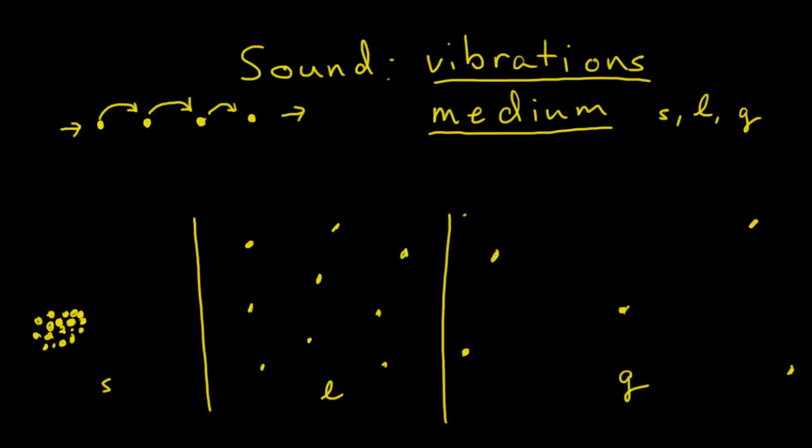So you can see, let's use a different color. So you can see that if the particles are very, very close together, like in a solid, once this one starts moving, it will almost immediately cause the next one to start moving, and the next one, and the next one, and the next one. So sound travels extremely fast through a solid because the particles are so close together. So once one particle starts to move, that energy can be transferred to the next particle very quickly, very easily.